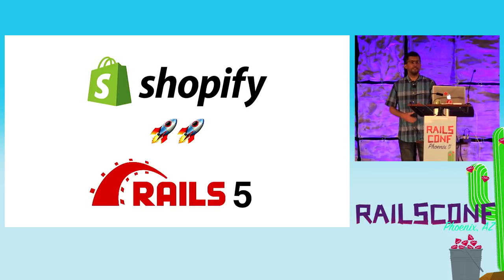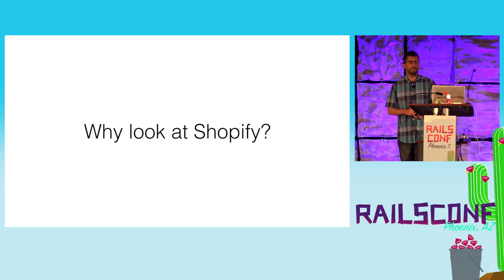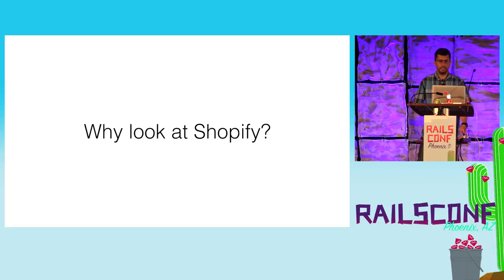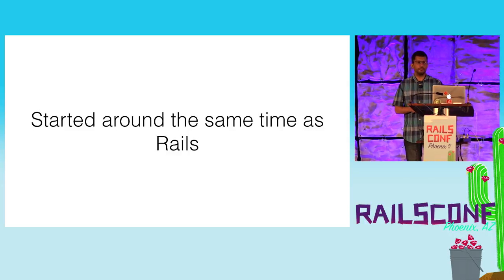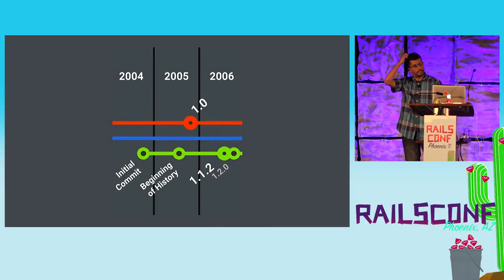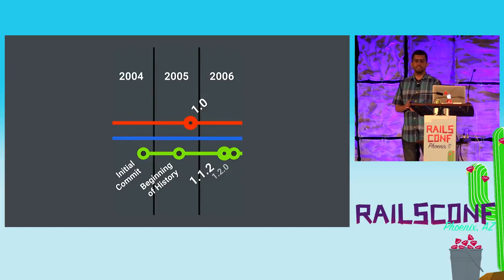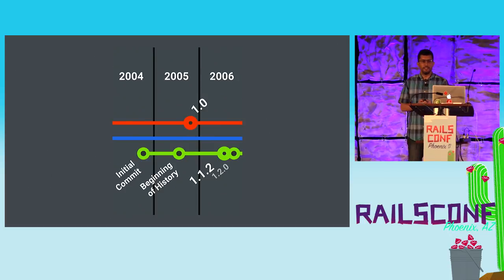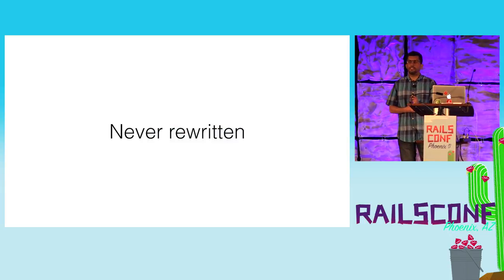This is the history of how Shopify released Rails 5 to production. But why look at Shopify? Because Shopify started around the same time as Rails. The first initial commit of the Shopify codebase was in 2004, even prior to the first sub-release of Rails. Rails 1.0 was only released in 2005. And this application was never rewritten — we are still using the same application that started 13 years ago.